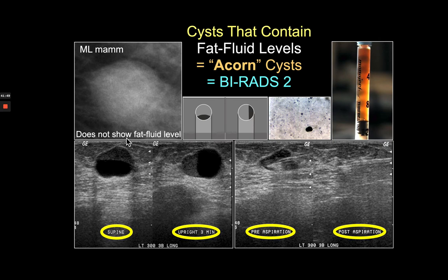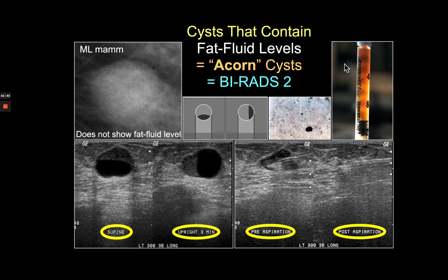Fat fluid levels are uncommon on mammography but extremely common on ultrasound — it's not unusual in severe fibrocystic change to have five or ten fat fluid levels on both sides. With the patient supine, echogenic fatty contents float to the anterior non-dependent part of the cyst. Putting her upright while scanning longitudinally, the fat fluid level shifts into the new non-dependent position after five minutes. When aspirated, fat gets emulsified through the needle and isn't visible as a white layer — but allowing the aspirate to sit upright for 30 minutes allows a white fat layer to form.